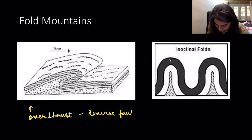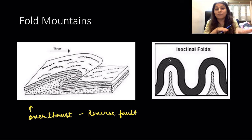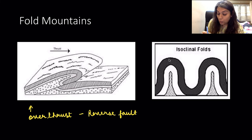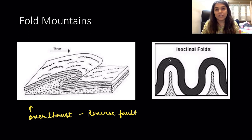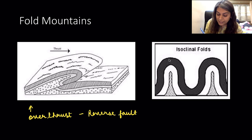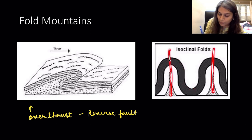There are three types of fault: first is the normal fault which happens during divergence, second is the reverse fault, and third is the transform fault that occurs at transform boundaries. One more fold to study is the isoclinal fold — when there is extreme equal pressure from both sides, the folds rise up, become very steep and parallel to one another.